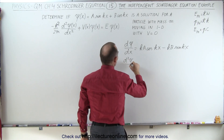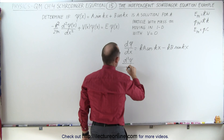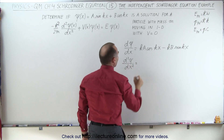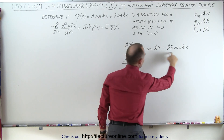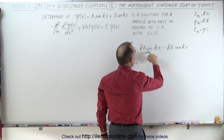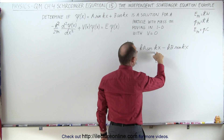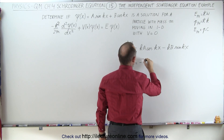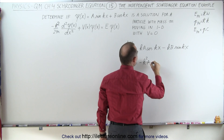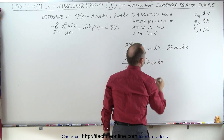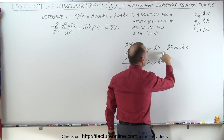Now we're ready to take the second derivative. The second derivative of the wave function with respect to x: the derivative of the cosine is negative sine, the derivative of the angle is k, so this becomes minus k squared times a times sine of kx.